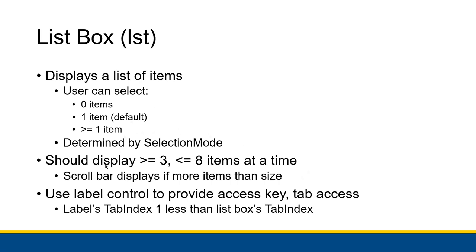The number of things the user can select is determined by the selection mode property. The GUI standards say you should display at least three but no more than eight items at a time in your list boxes. If you have fewer than three, there are probably better ways of displaying it. If you have more than eight, that's going to be a lot. A scroll bar will display if there are more items than the size of the list box allows, so the user can scroll through and select everything. You also want to use a label control to provide an access key and tab access for that list box, as well as to let your user know what's going on — similar to how you'd use a label for a text box. The label's tab index should be one less than the list box's tab index.